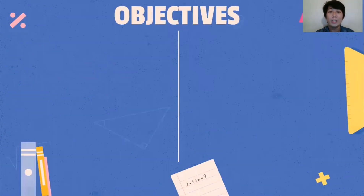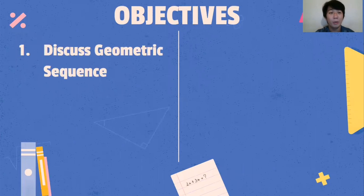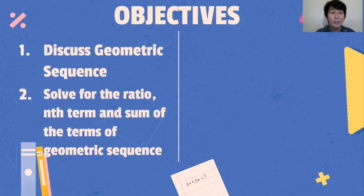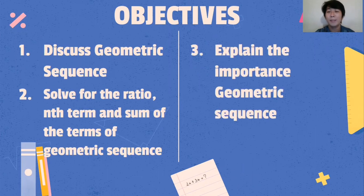What are the objectives of this lesson? Number one, discuss Geometric Sequence. Number two, solve for the ratio and sum of the terms of Geometric Sequence. Number three, explain the importance of Geometric Sequence. Those are the objectives of the lesson.